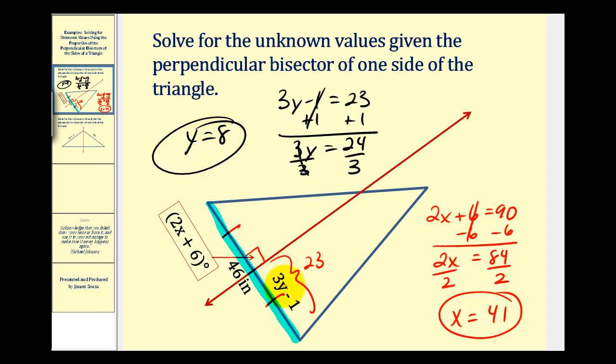Let's go ahead and check that. 3 times 8 would be 24 minus 1 would be 23, or 23 inches. Let's go and take a look at one more example.